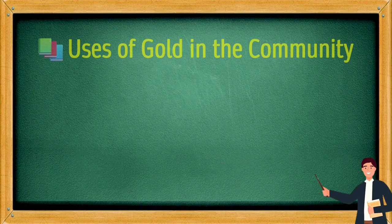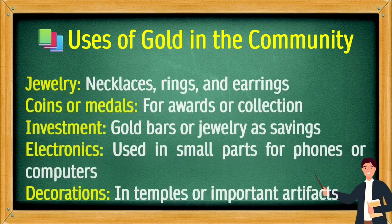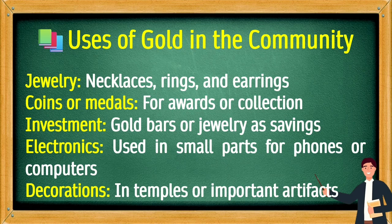Uses of gold in the community: As jewelry — necklaces, rings, and earrings. Coins or medals for awards or collection. Investment — gold bars as savings. Electronics — used in small parts for phones or computers. Decorations — in temples or important artifacts.